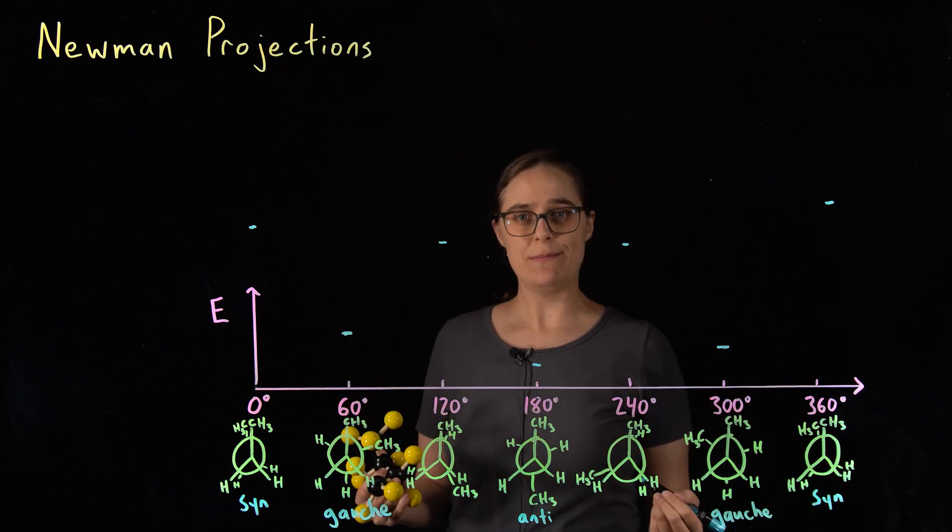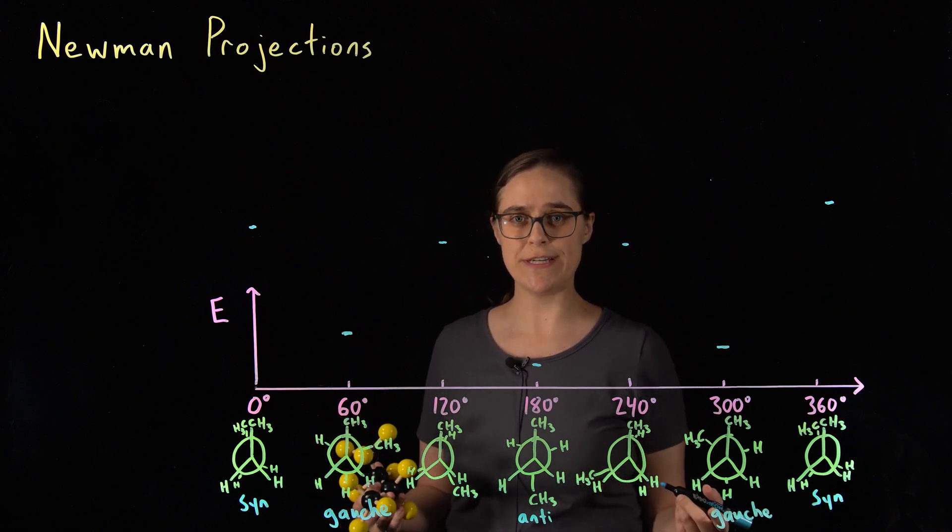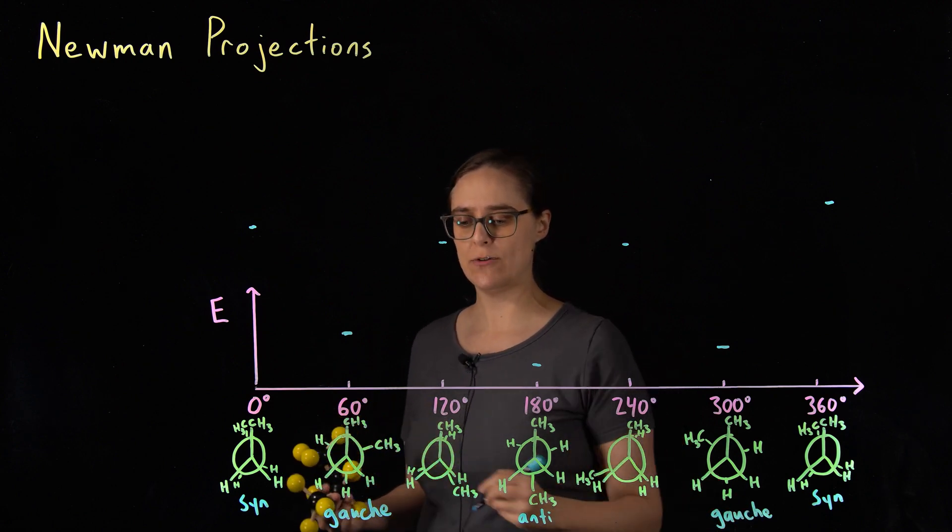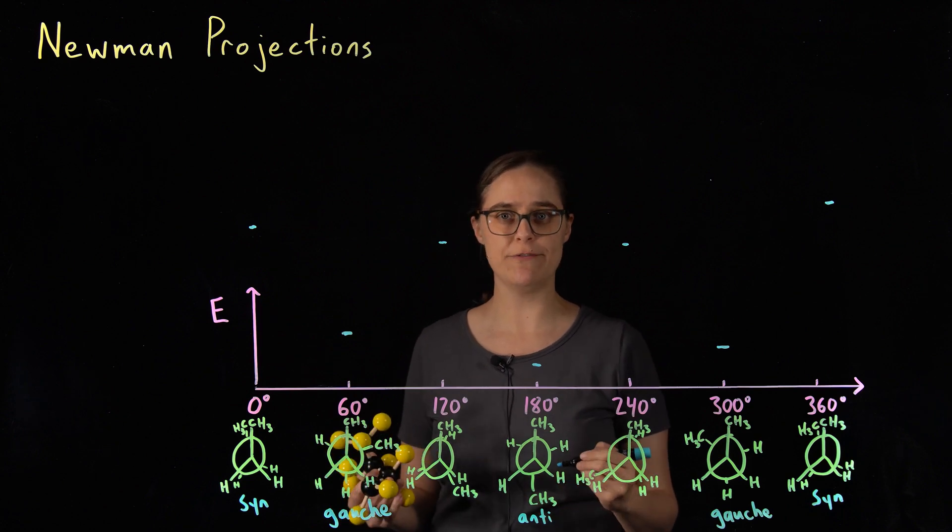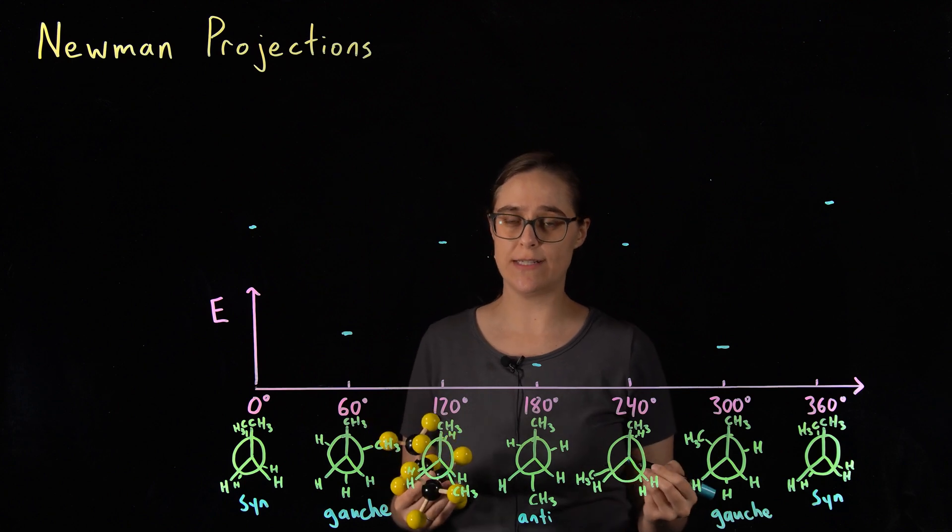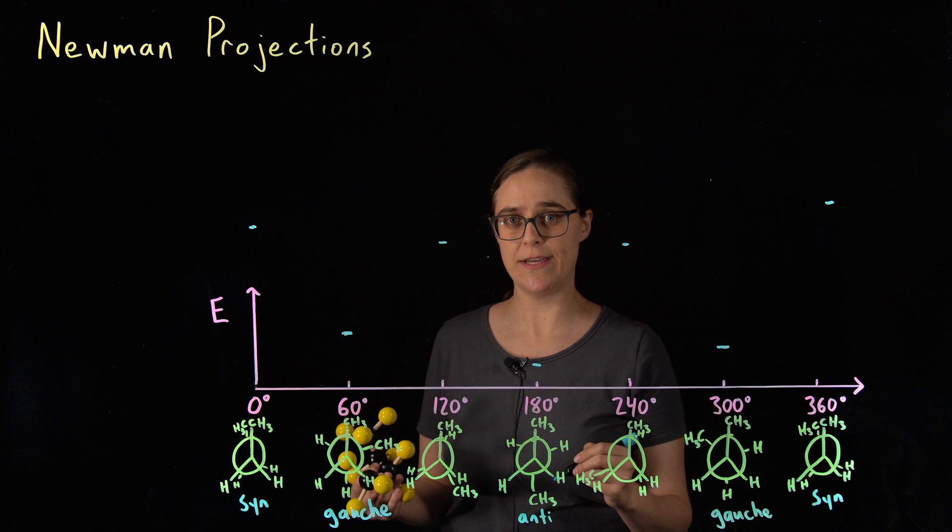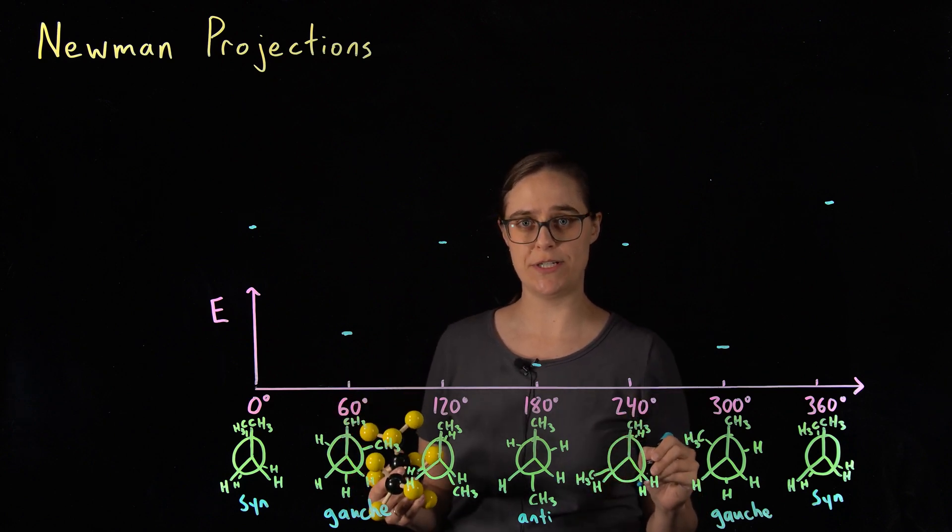People say that chemistry has confusing terminology, but in this case, anti comes from the Greek for opposite of, and gauche comes from the French for left. So it's not a matter of confusing terminology, it's just that you need to take the time to learn every single language in the world before studying chemistry if you want the terminology to make sense.